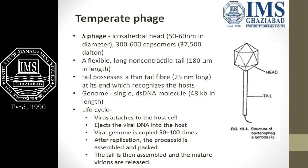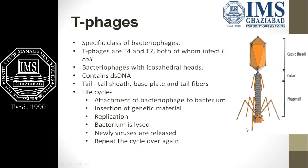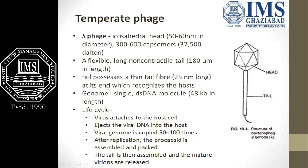Lambda phage has a flexible, long, non-contractile tail that is around 180 nanometers in length. It is important to note that the tail is non-contractile, meaning the tail will not contract. It possesses a pin-like tail fiber around 25 nanometers long at its end, which recognizes the host. There are tail fibers that get attached to the bacteria.